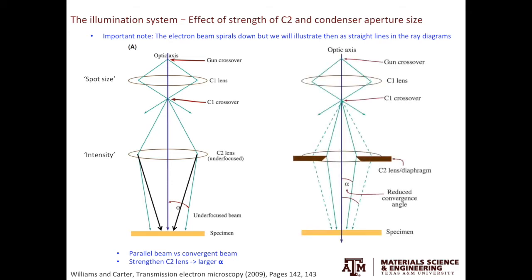We can also use the size of the condenser aperture to tune the convergence semi-angle. If we use a smaller C2 aperture, then we will have a smaller convergence angle. If you recall what we learned in the electron sources video, the value of alpha can directly affect the beam diameter, or the probe size, which determines the STEM resolution. Larger alpha leads to larger numerical aperture and improved resolution based on the diffraction limit.